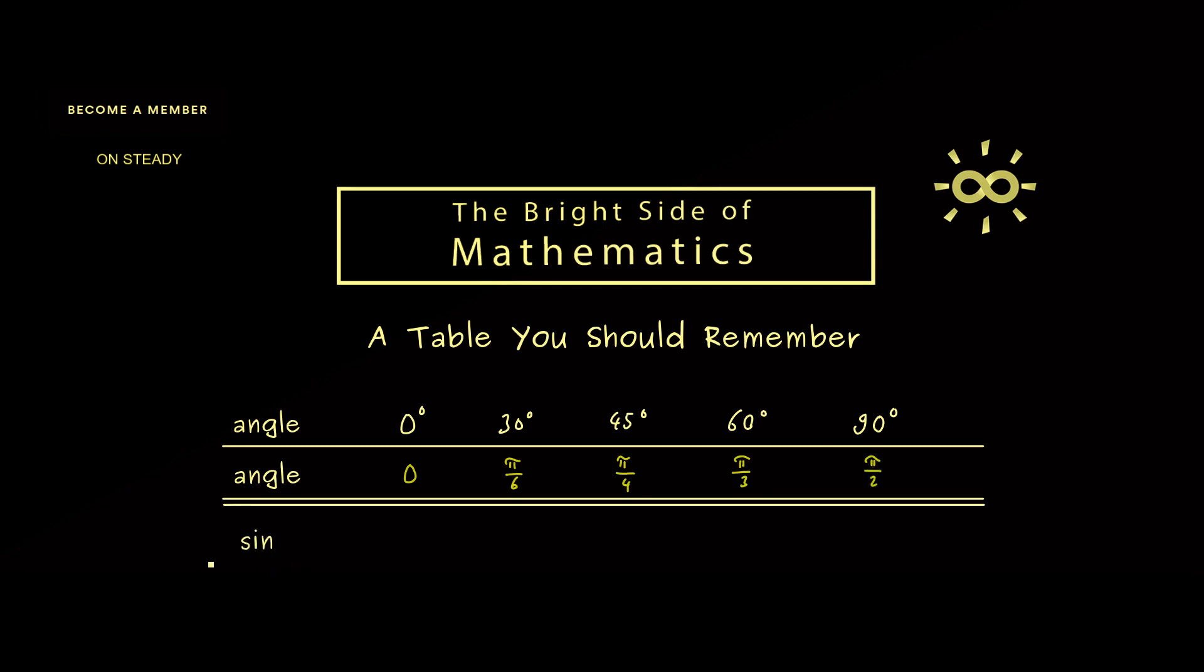Now let's take the function sine and calculate the values of these angles. The sine of 0 is 0, but let's write it as 1/2 times the square root of 0. The next value then reads 1/2 times the root of 1.